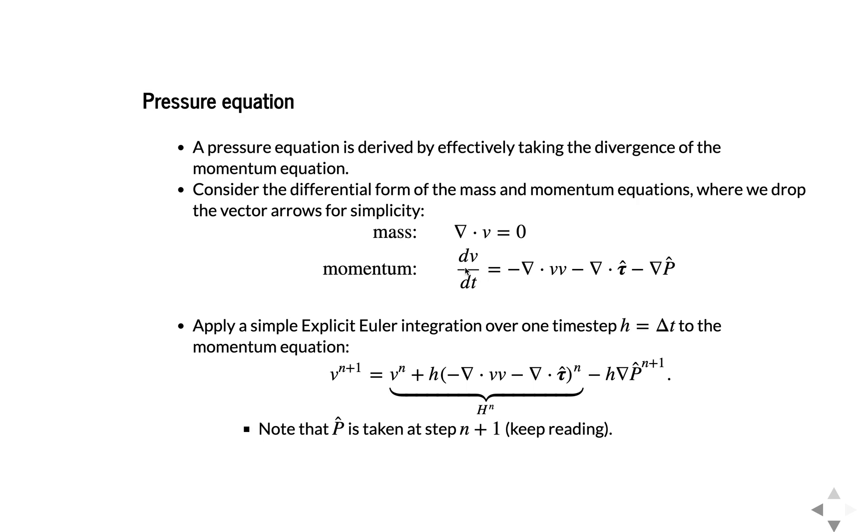So we'll take the momentum equation and simply apply an explicit Euler integration over one time step. So we'll let the time step be h. So the explicit Euler, if we call this our right-hand side, explicit Euler says delta v over delta t equals this. You multiply the delta t across, and then the delta v becomes v next equals v previous plus delta t, which is h times this whole right-hand side. So simple explicit Euler integration step. Now we'll group this whole term here. We'll just call that h, n for convenience.